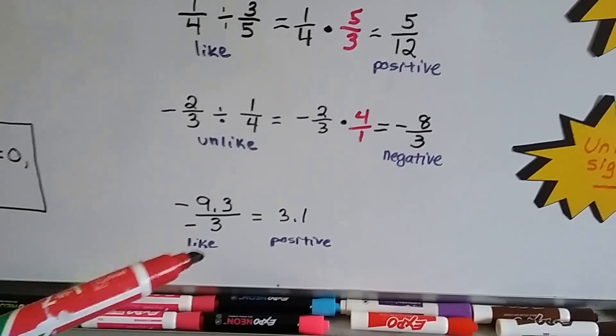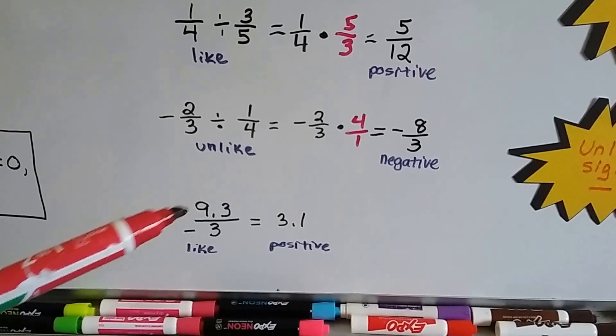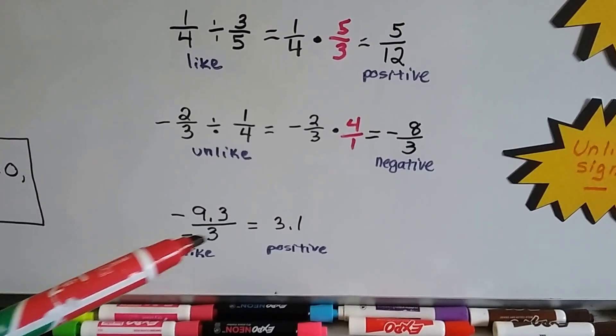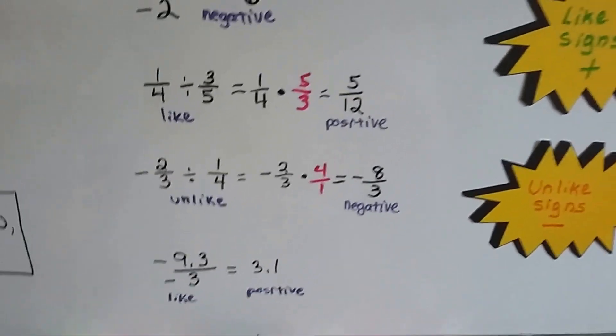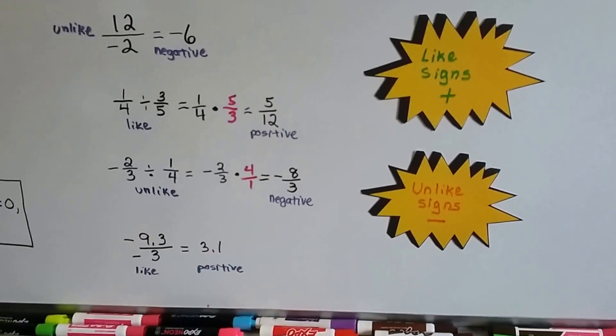We multiply straight across as 8 over 3. We have a negative and a negative. Those are like signs. Negative 9.3 divided by negative 3 is a positive 3.1. Like signs are positive.